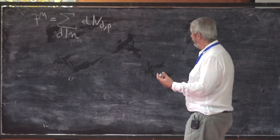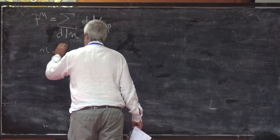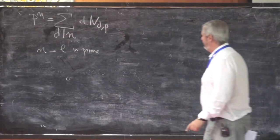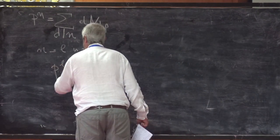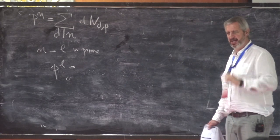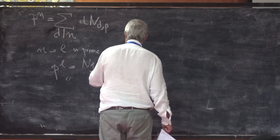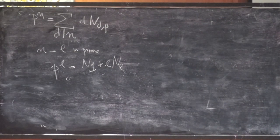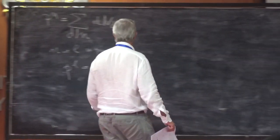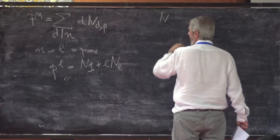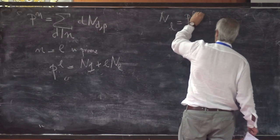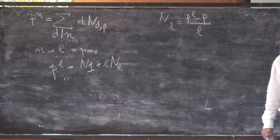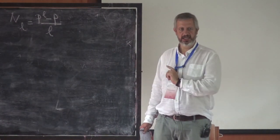For example, if n = l is prime, the divisors of l are only 1 and l. So p^l = N_1 + l * N_l. Since N_1 = p, we get N_l = (p^l - p) / l. This is a formula for the number of irreducible polynomials of degree l when l is prime — an extremely useful formula.